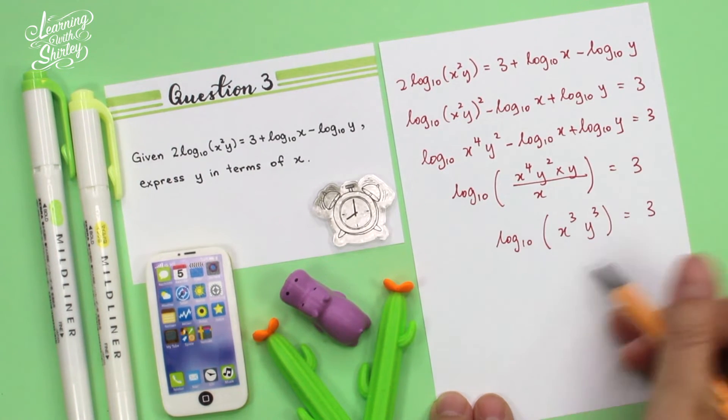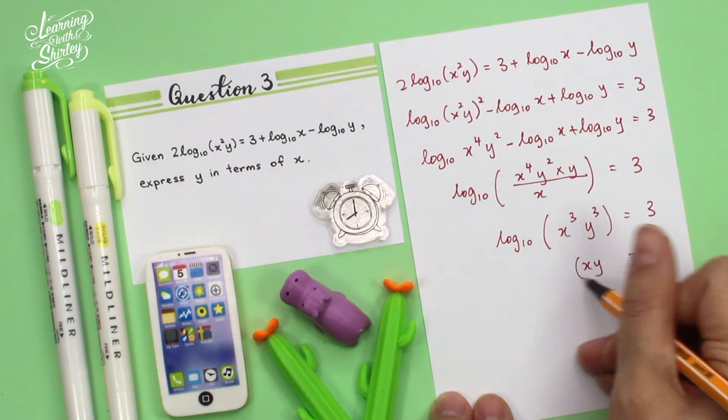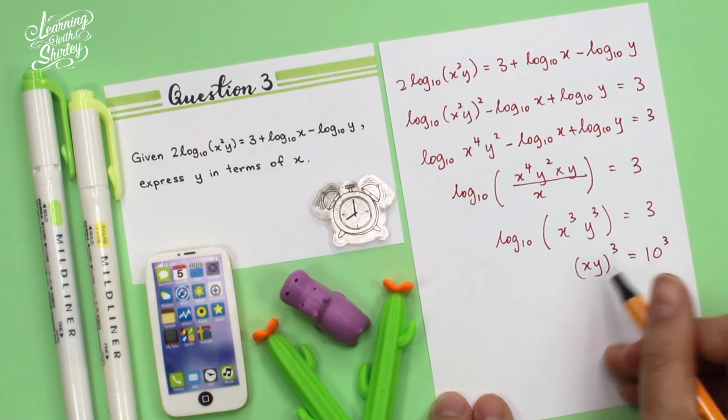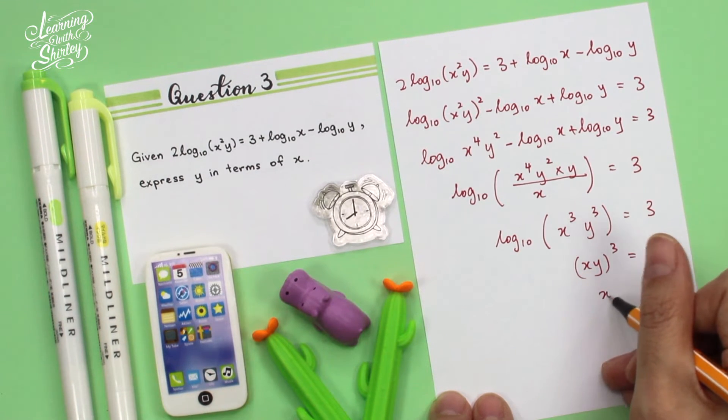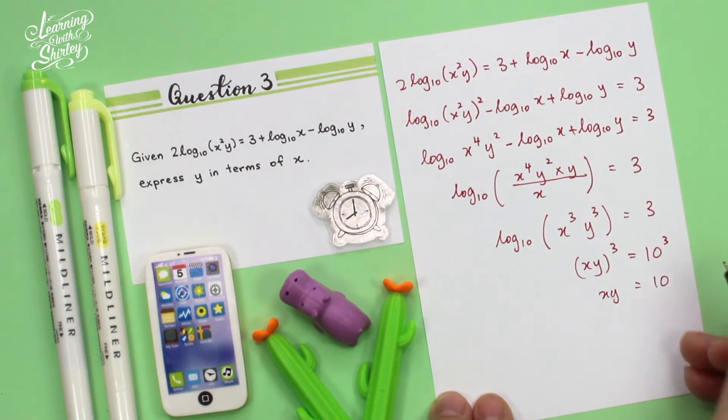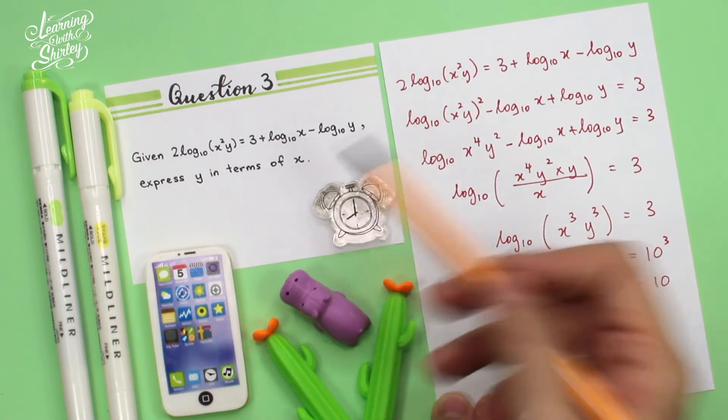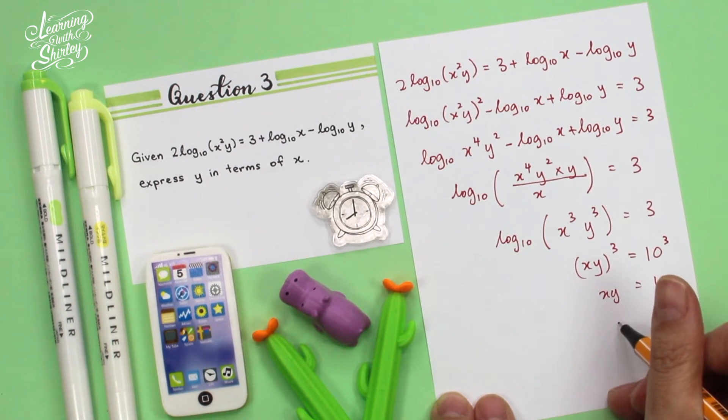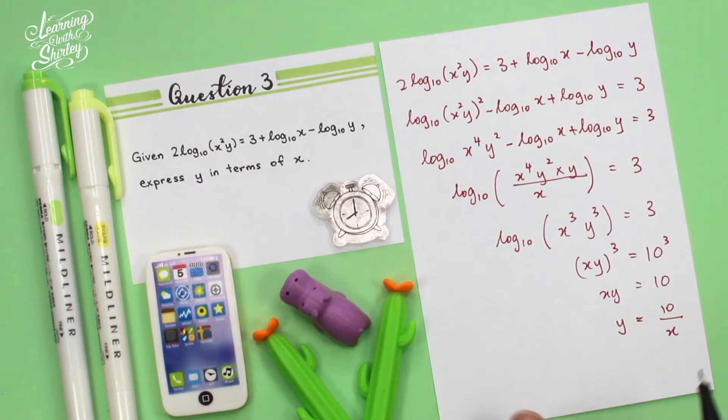Okay, and next, you just have to change this to index form. So this 10, I move it to the right-hand side, becomes 10 to the power of 3. And then this one, I can factorize it, becomes (xy)³. And then we compare because both are the same power. So xy equals 10. So let's go back at the question again. Express y in terms of x, which means that y must be the subject on the left. So therefore, y equals 10 / x. And that's the final answer.